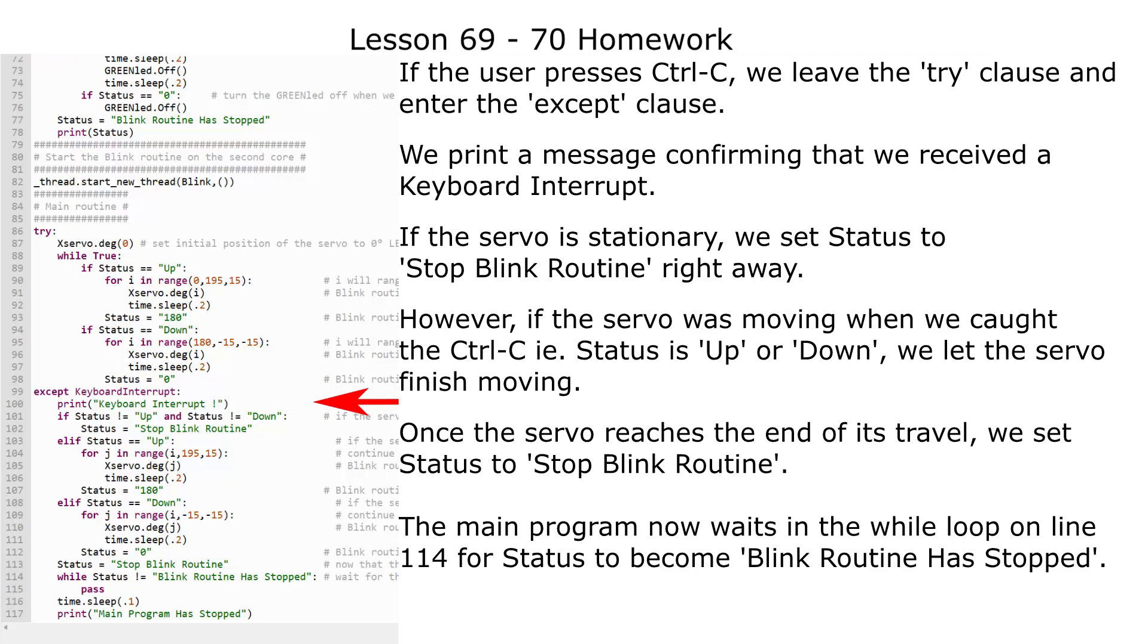If the user presses control C, we leave the try clause and enter the except clause. We print a message confirming that we received a keyboard interrupt, and if the servo is stationary, we set status to stop blink routine right away.